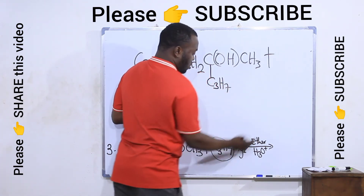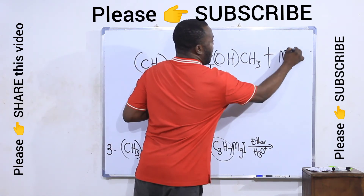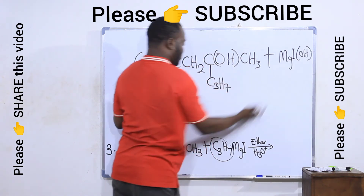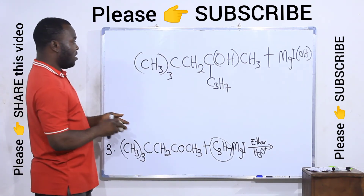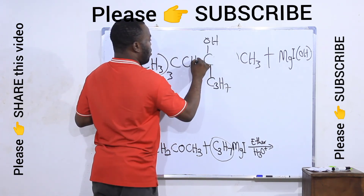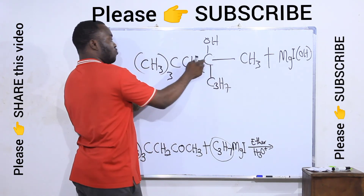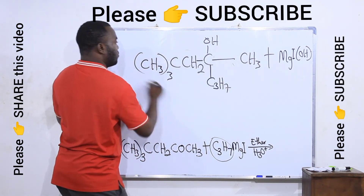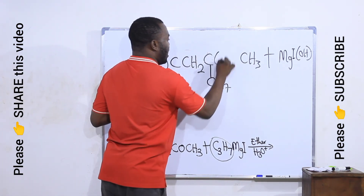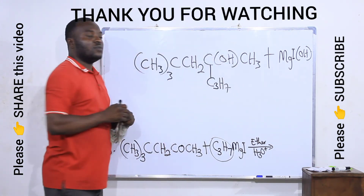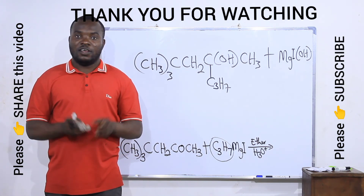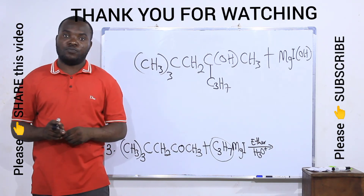The other byproduct is MgIOH. This is a tertiary alcohol because we have the OH on this carbon with three alkyl groups bonded to it — one, two, three. Thank you for watching this video. Click the next video to see more on this topic, and do not forget to subscribe to my channel.